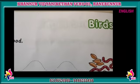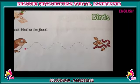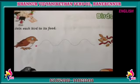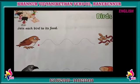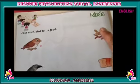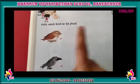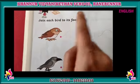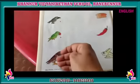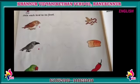Yes, birds. You know birds? Yes, tell me — name of birds. Yes: sparrow, parrot. It's very good. Crow, eagle. Yes kids, see here. These are birds. These are their food. Join each bird to its food. See — one side birds, the other side their food.